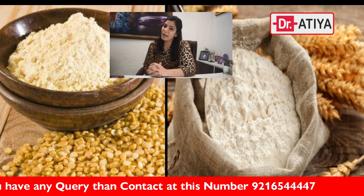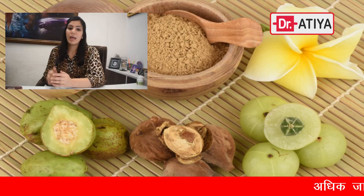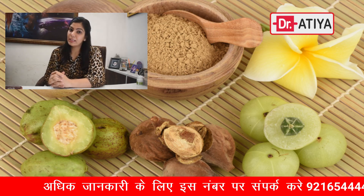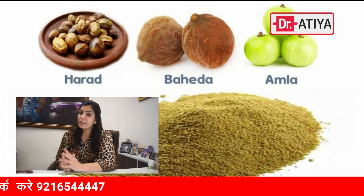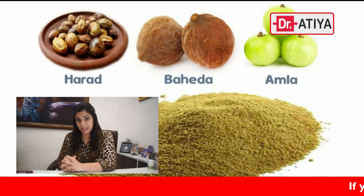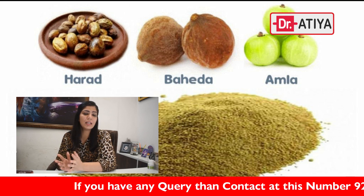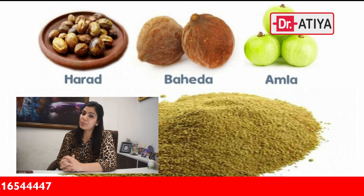To do Udhvartanam, one must take either gram flour (chane ka atta) or barley flour (jau ka atta) — any one of them. Add one teaspoon of Triphala, which means three fruits: Amla (amalaki), Harad (haritaki), and Baheda (vibhitaki). Triphala is easily available in any Ayurvedic or medical store.